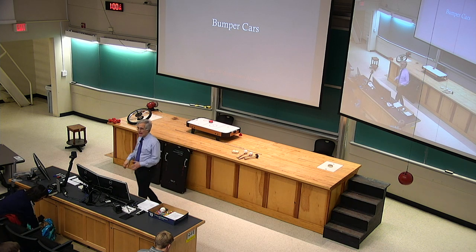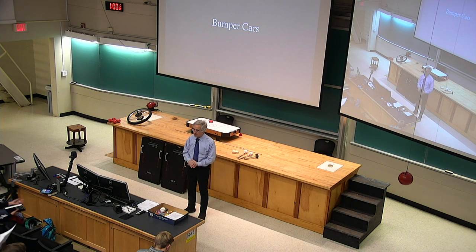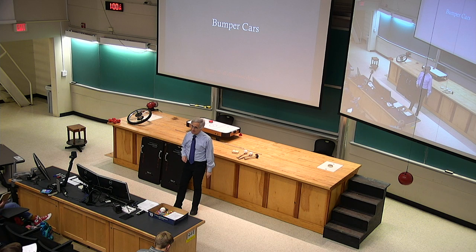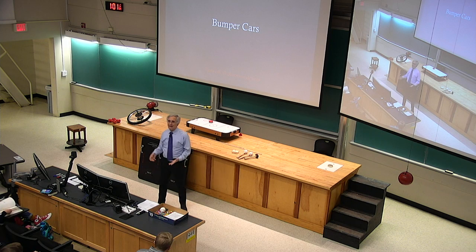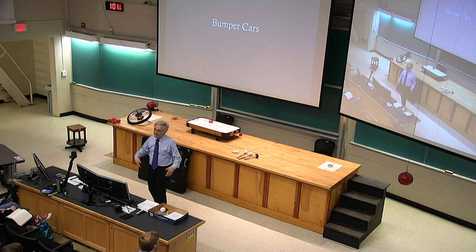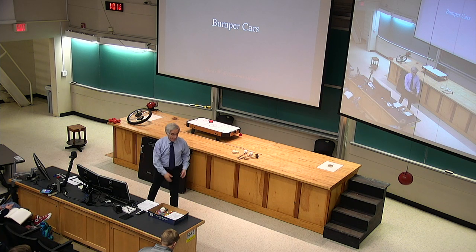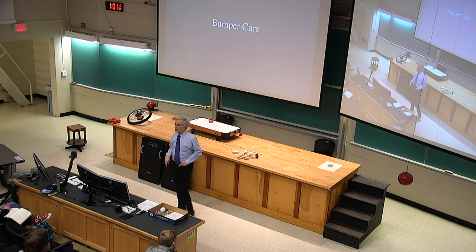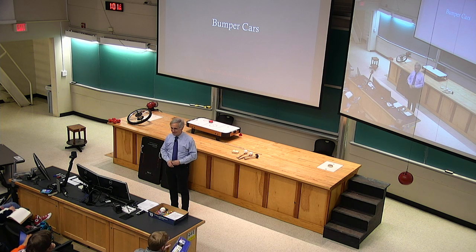Today's topic is bumper cars, and it's the last of the topics in the introduction to general mechanical physics, after which we'll move off into electricity and magnetism. Bumper cars are a beautiful example of three conserved quantities of physics in action. We've seen one already at some length — that energy moves from thing to thing, passed along mechanically by doing work, and it's in bumper cars too. But there are two other conserved quantities that really play an important role in bumper cars, and it's a topic I like.